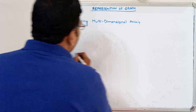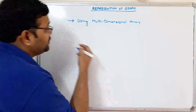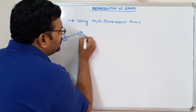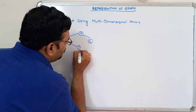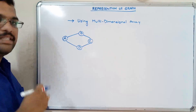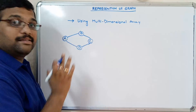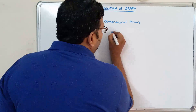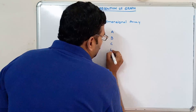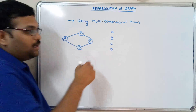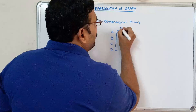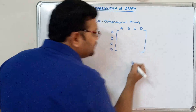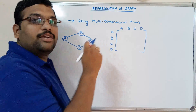Let us take an example graph and then we'll apply the representation. We'll take the similar example which we considered in the previous session. So this is a graph, and we have to represent this in a multidimensional — specifically a two-dimensional — array. These are the nodes as rows and these are the nodes again as columns. So rows and columns represent the nodes.